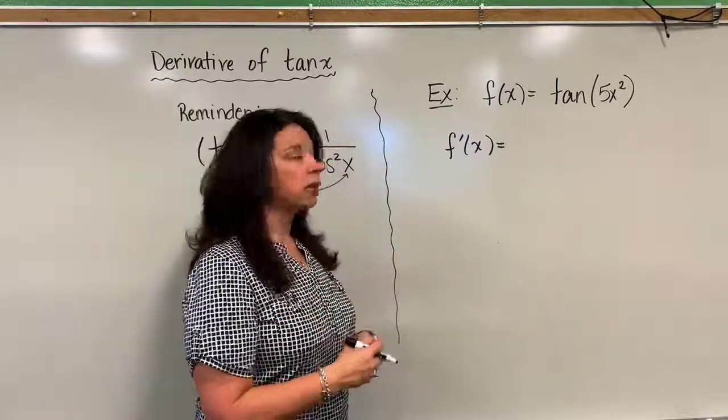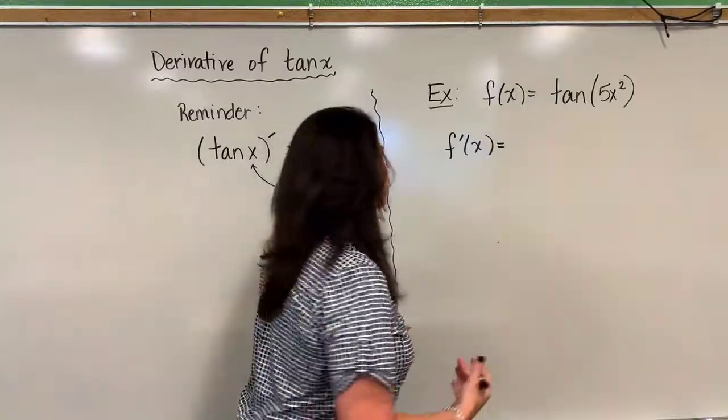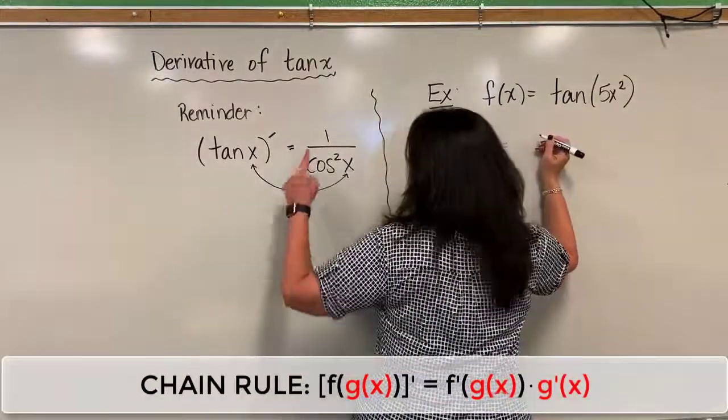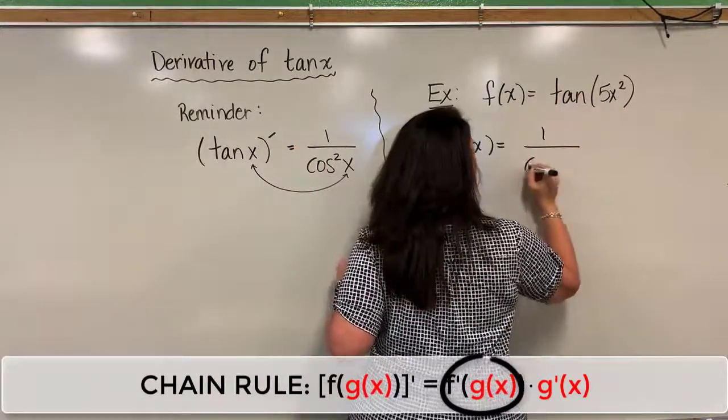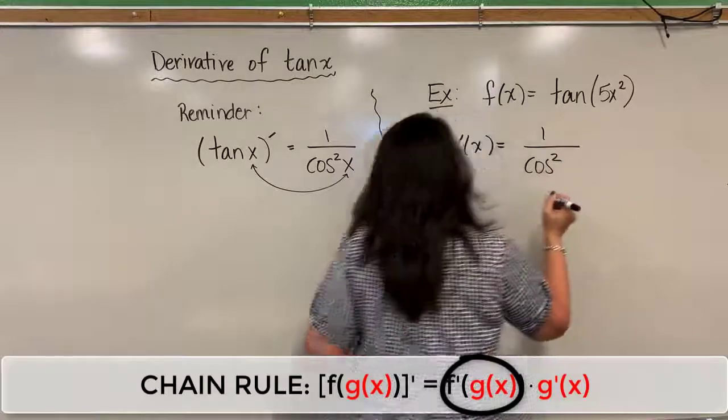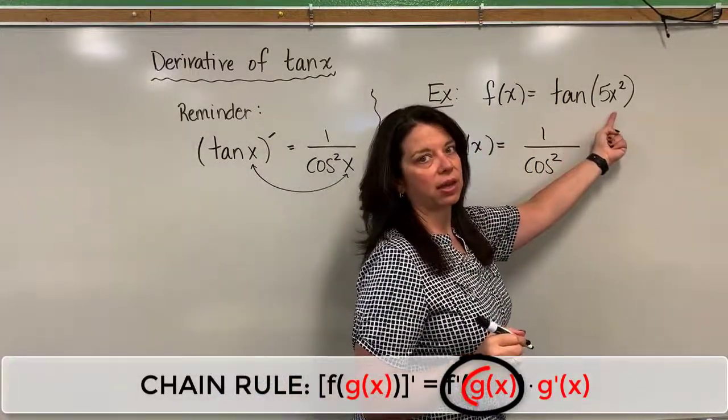So just like we have with the chain rule, what we're going to do is keep that inside function intact. So we have here, instead of tangent, I'm going to take its derivative. I have 1 divided by cosine squared, but I'm not going to write the X here because my argument is 5X squared instead.